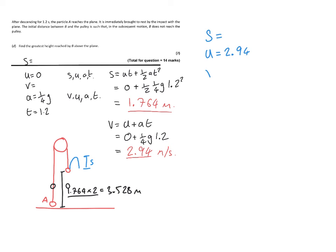What we need to do now is, at this point, the string goes slack. The acceleration is going to become G, so it's going to be minus 9.8. The speed at which B hits that point is going to be 2.94, the same speed that A is when it hits the ground.